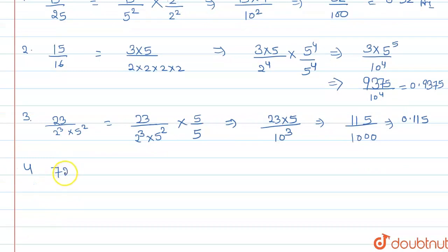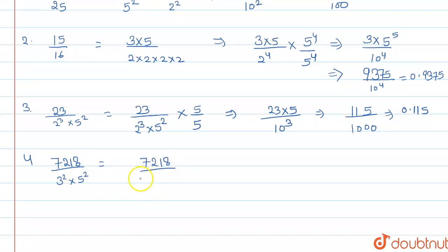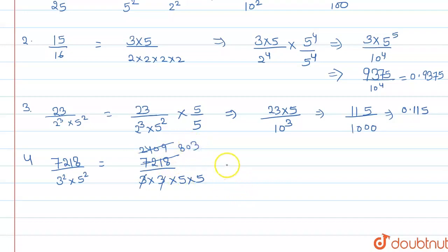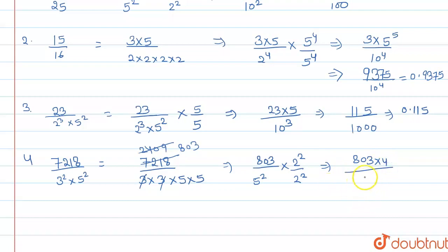The fourth rational is 7 divided by something with 3 squared and 5. We simplify: 3 divided by 3 into 5, the 3s cancel. After working through the steps — dividing and converting — we get 3 divided by 5 squared, then 312.5 divided by 10 squared, which gives 32.12.